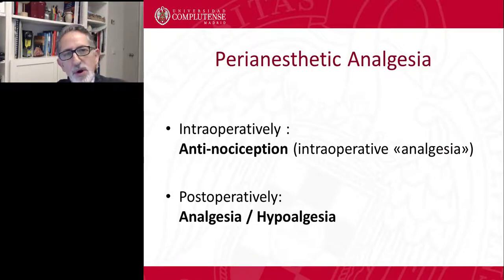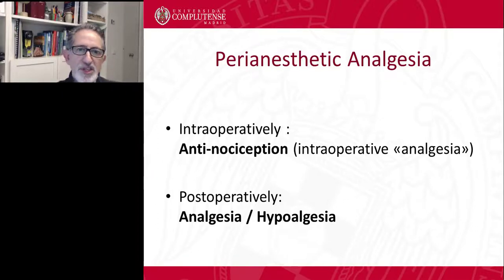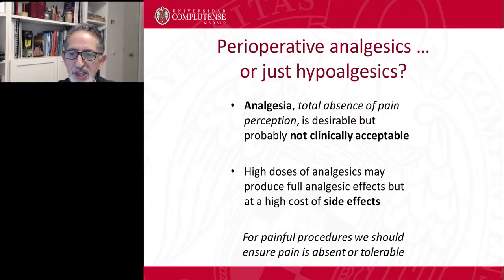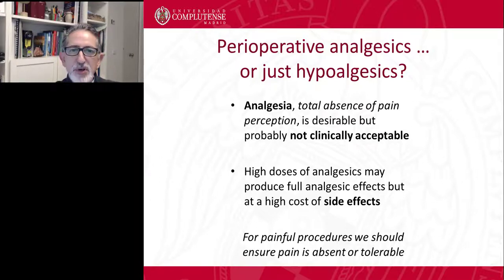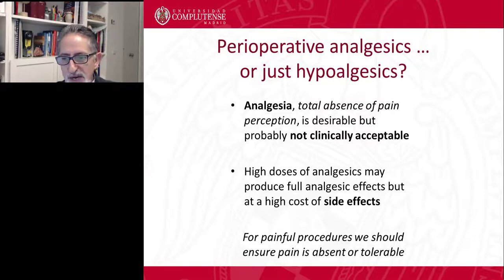Postoperatively, we may require analgesics, and most of them will provide hypoalgesia — referring to a lower degree of pain perception or pain sensation. Analgesia, the total absence of pain perception, is desirable but probably not clinically acceptable, because high doses of analgesics may produce full analgesic effects but at the high cost of adverse effects. The clinical idea is to provide analgesia just to ensure pain is absent, or at least tolerable by the animal.